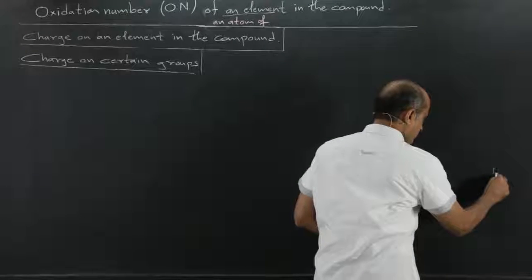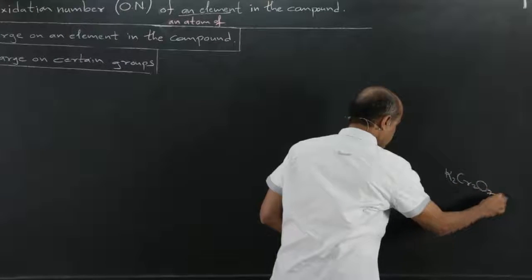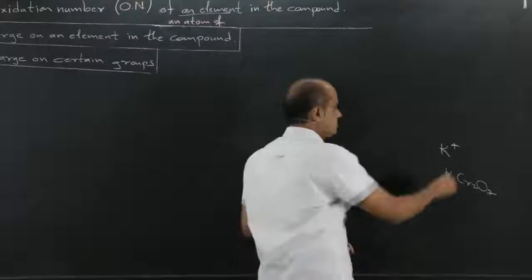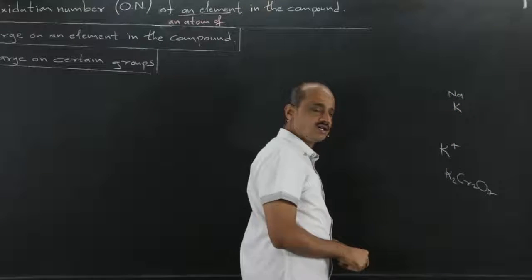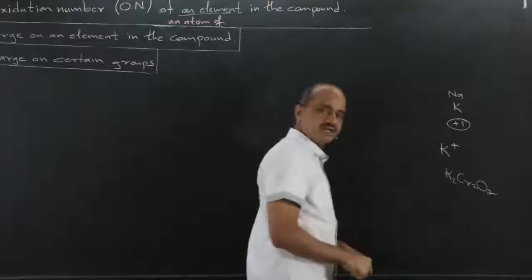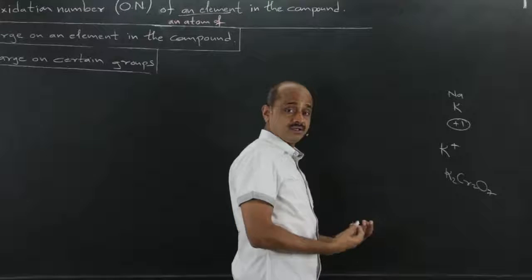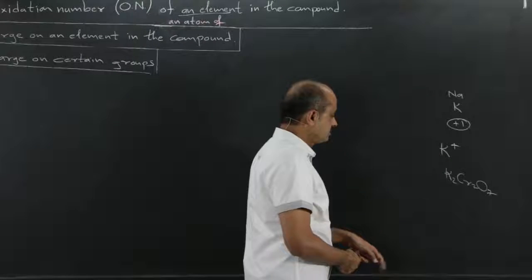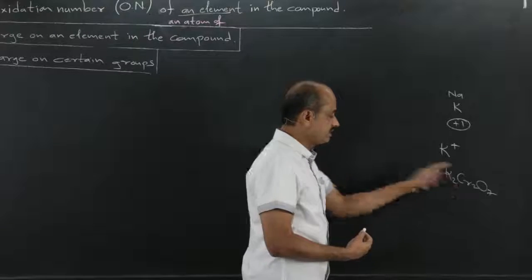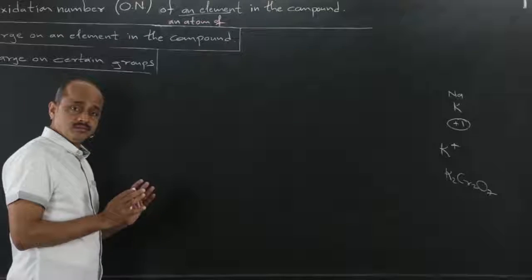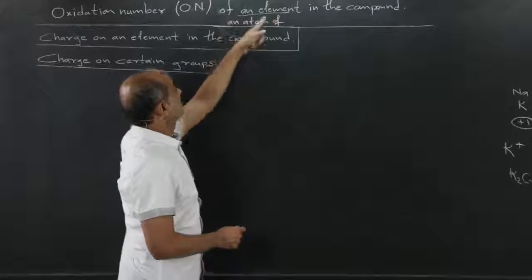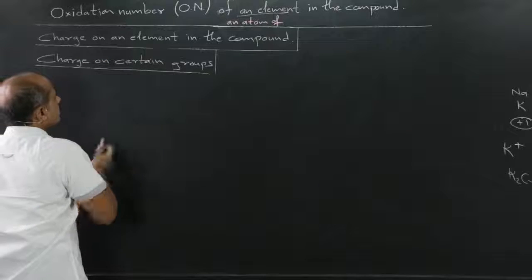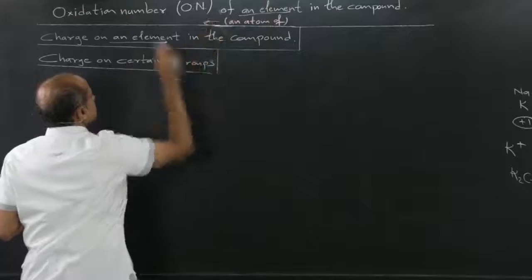For example, in K2Cr2O7, the oxidation number of potassium is +1. In the periodic table, potassium is below sodium, and alkali metals have an oxidation number of +1 — they have a tendency to donate one electron, like Na+1 in NaCl. Similarly, potassium carries +1 charge, and two such potassium atoms are present here. So, the oxidation number of an atom of an element in a compound is the charge on that atom.